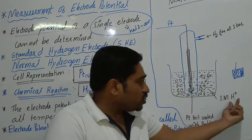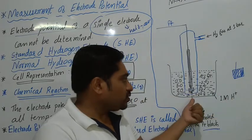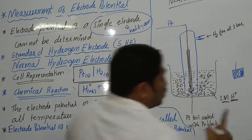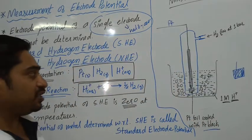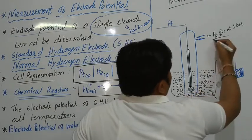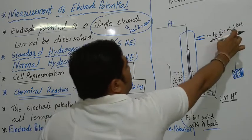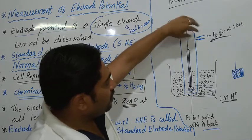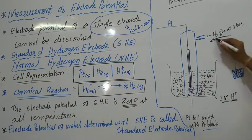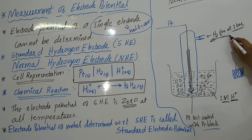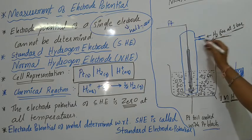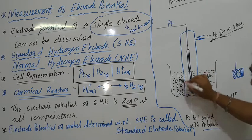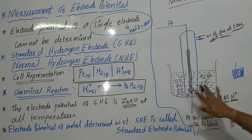We take a solution in which the concentration of H⁺ ions must be one molar. We bubble pure hydrogen gas at one bar pressure through this electrode constantly. The pressure of this pure hydrogen gas must be maintained at one bar, and the hydrogen gas is bubbled through the solution, forming bubbles. This is the construction of the standard hydrogen electrode.